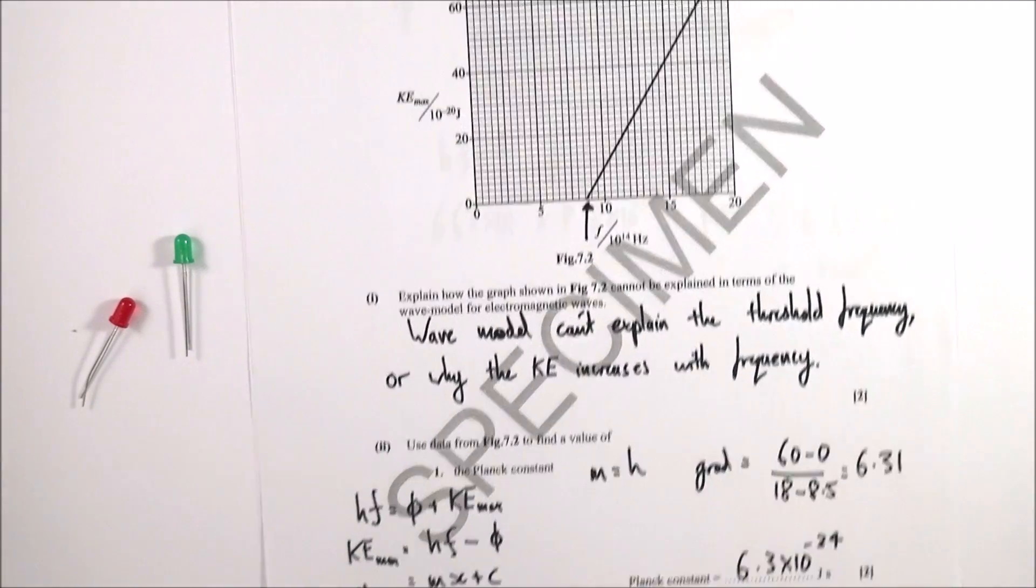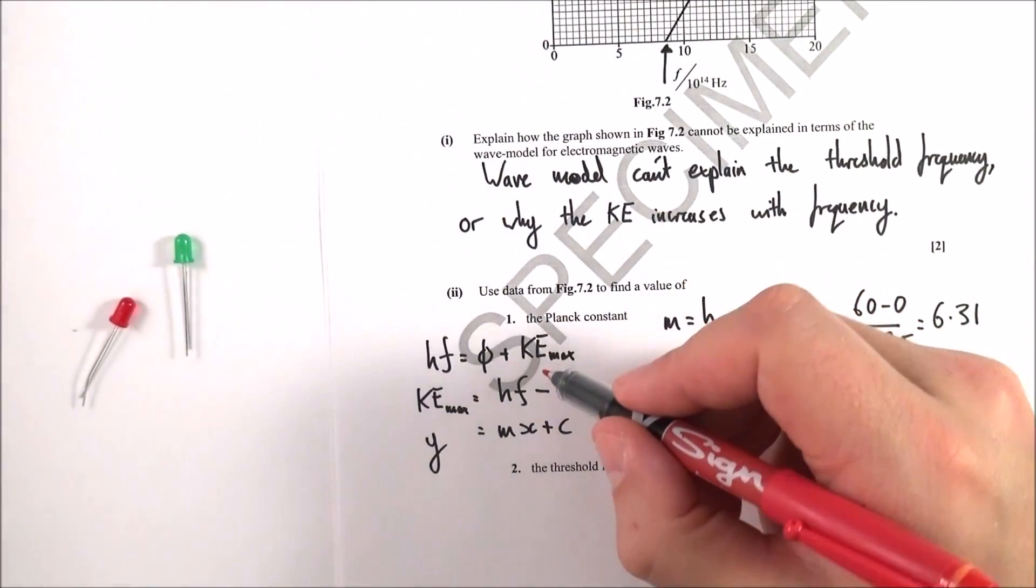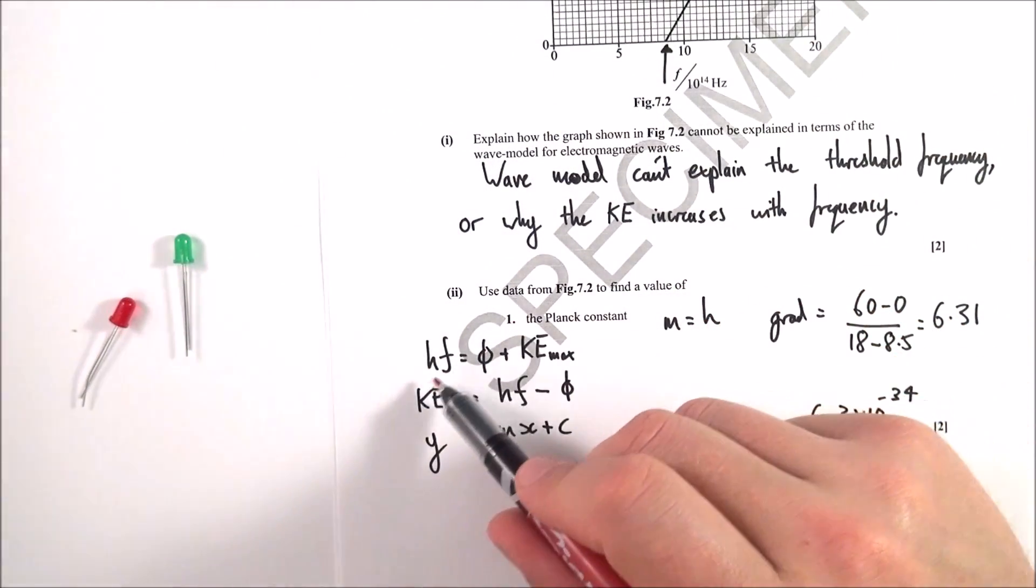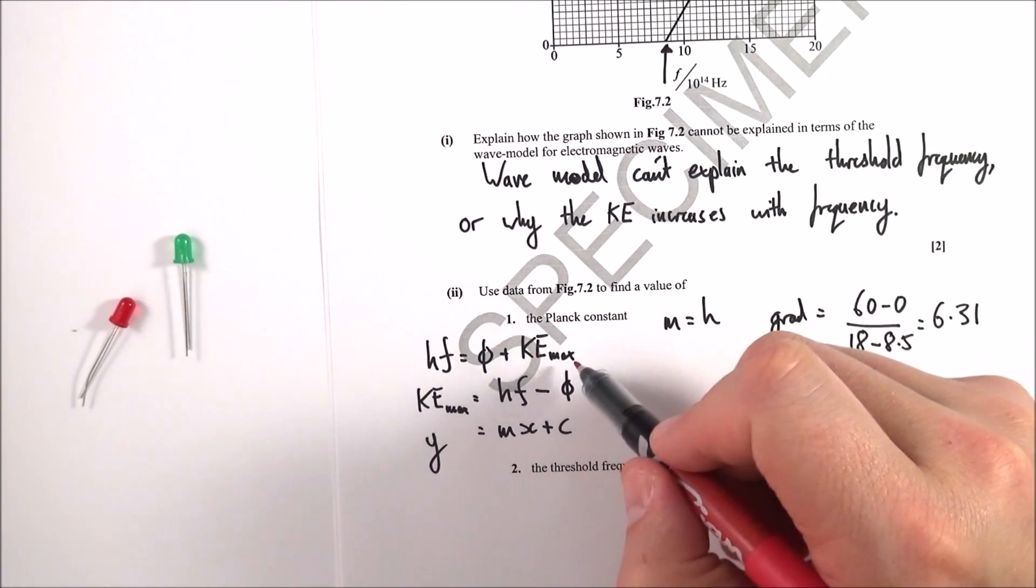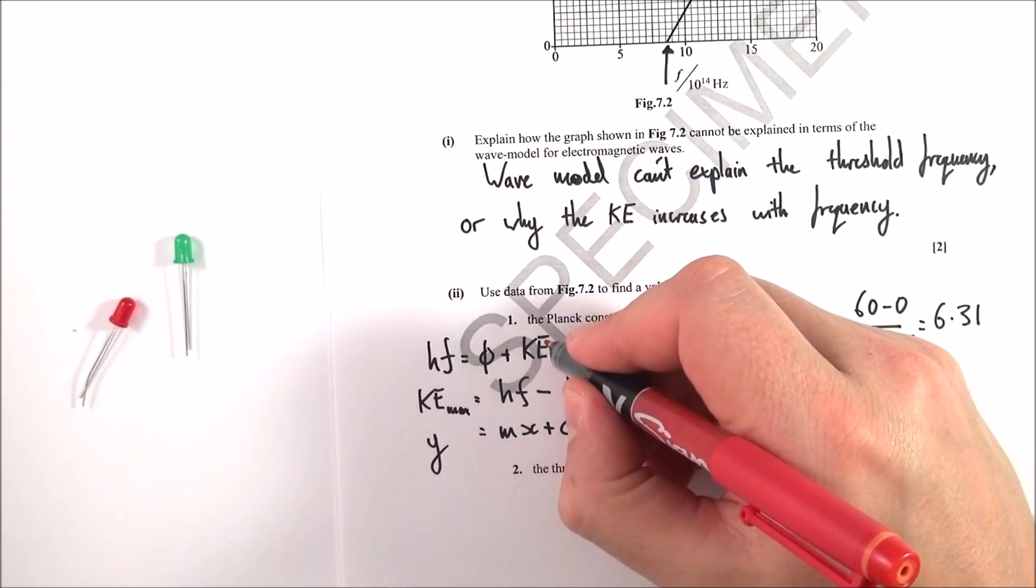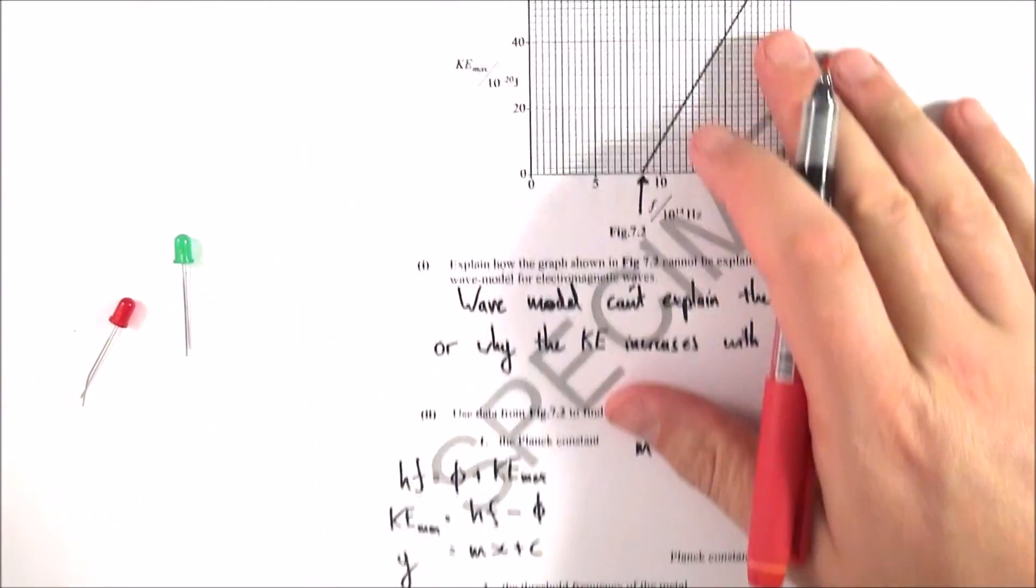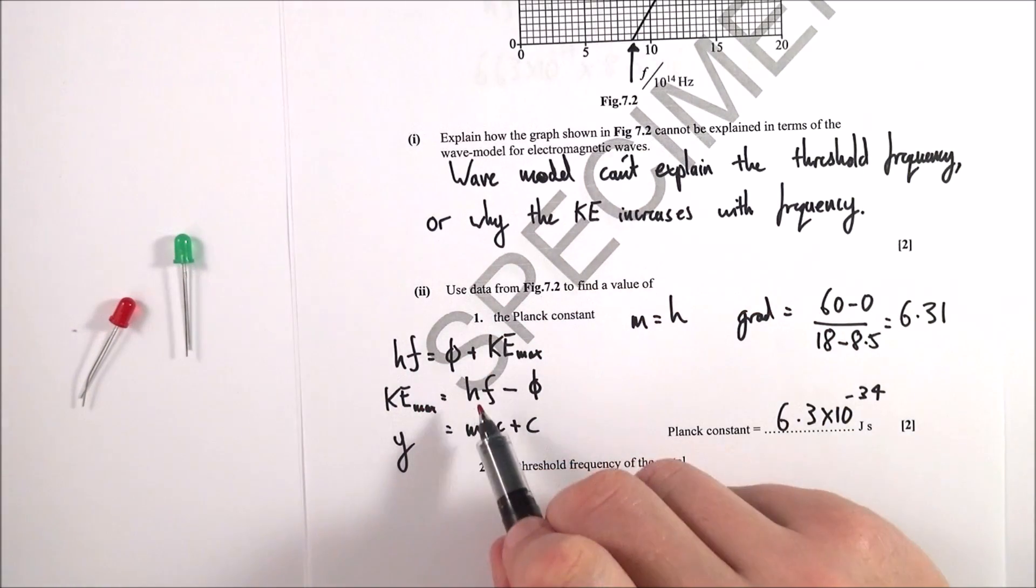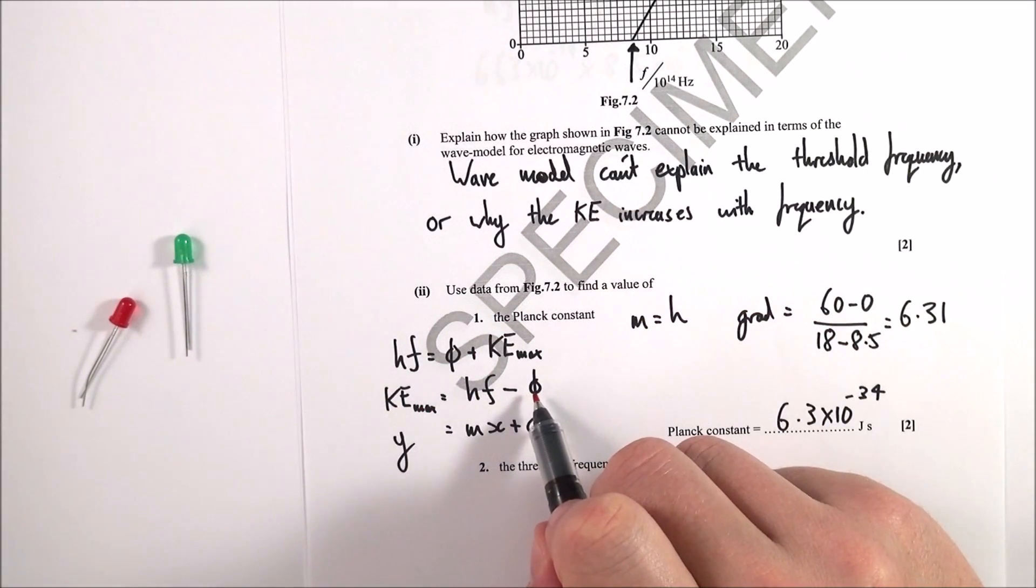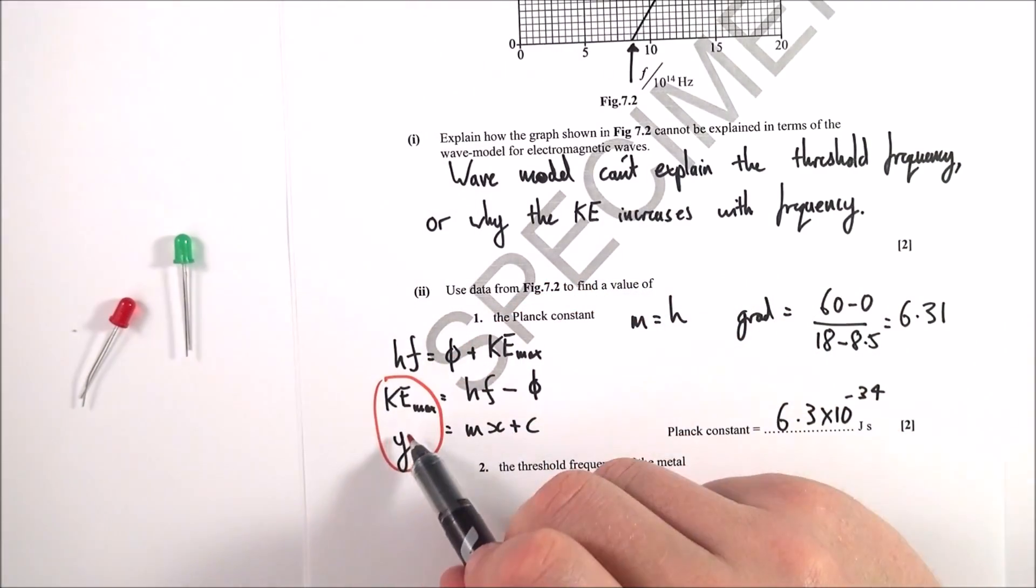Now some maths. What is the Planck constant? This is Einstein's photoelectric equation: hf equals phi plus KE max. I'm going to rearrange that to make KE the subject because KE is what's been plotted on the y-axis. So I can say that KE is equal to hf minus phi.